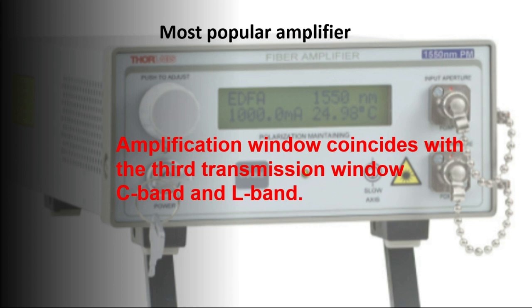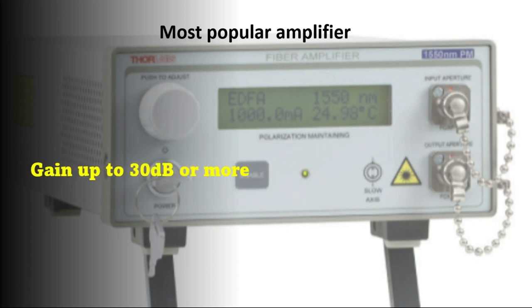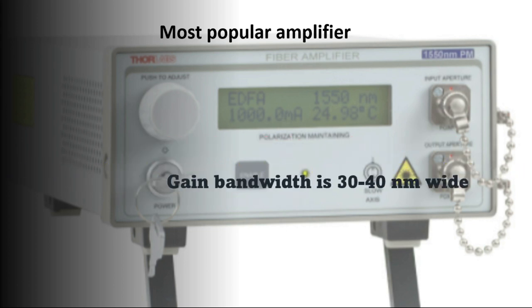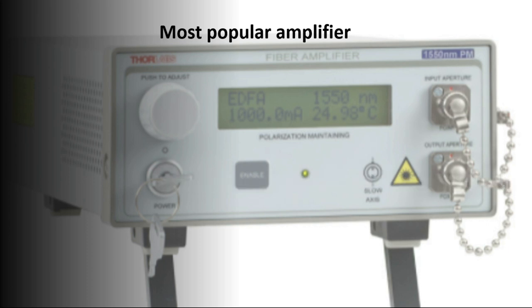Both bands can be amplified by EDFA but it is normal to use two different amplifiers, each for one band. It gives gain up to 30 dB or more. The total gain bandwidth is 30 to 40 nanometers wide, with output power of plus 17 dBm.